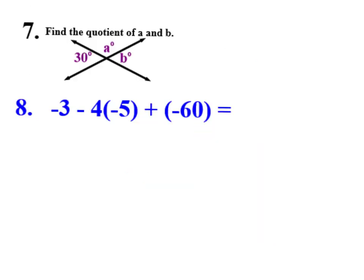Number 7 says find the quotient of A and B. Quotient meaning divide. So I really need to find out what A is and divide it by B to get my answer. That's that word, quotient, is a word that we should know. So to get A and B, we talked about this earlier. These two are right across from each other, vertical angles. Vertical angles are always congruent. So B has to be 30 degrees.